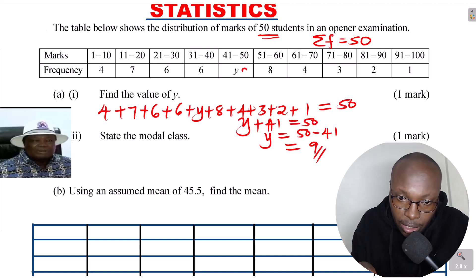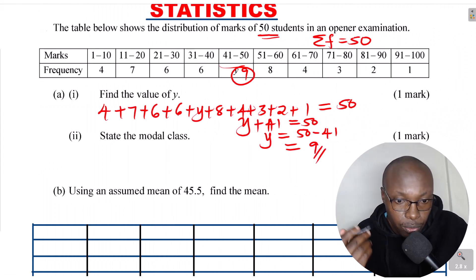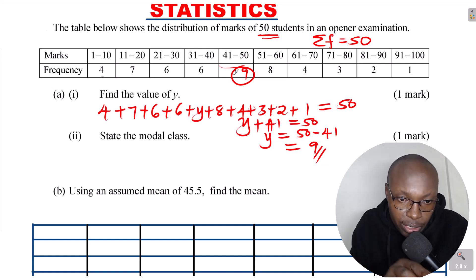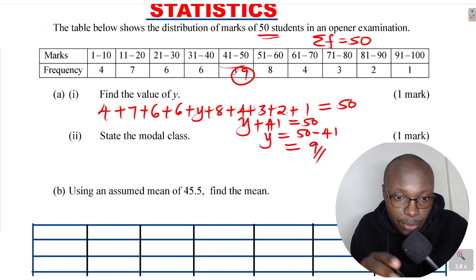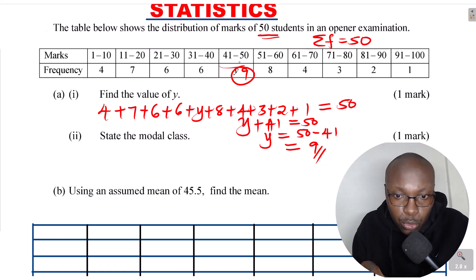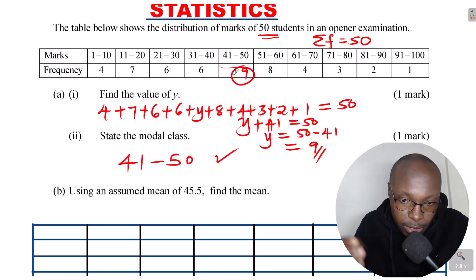The value of y is 9. That is just one mark. The next question, part 2: state the modal class. The modal class is the class with the highest frequency. Looking at all the frequencies — 4, 7, 6, 6, and y which we just calculated as 9 — 9 is the highest frequency. So the modal class is 41 to 50.